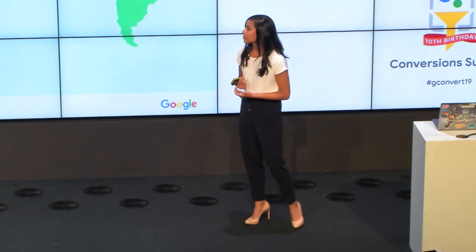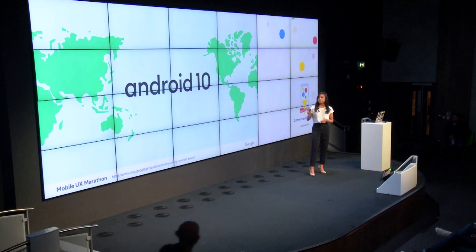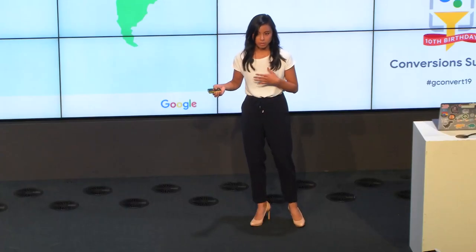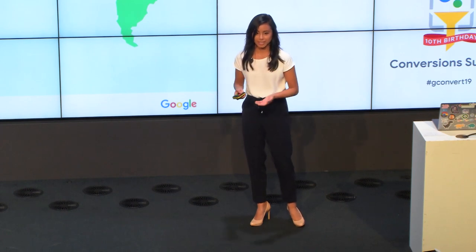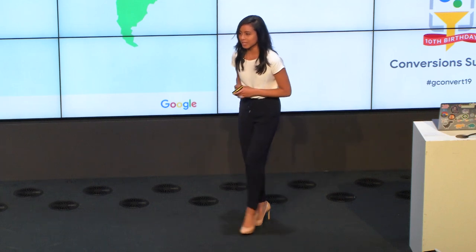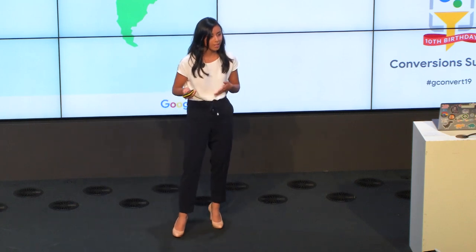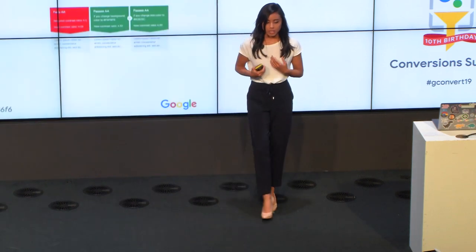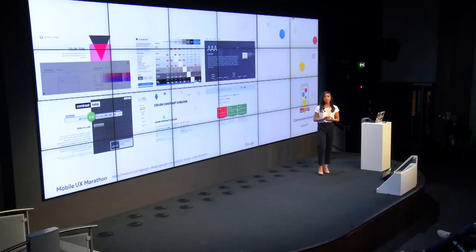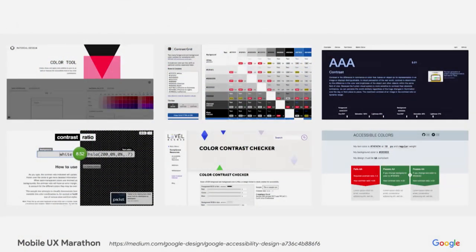A recent example that excites me is the recent Android redesign. Something as simple as turning fonts to black instead of really bright green makes it really easy to read. Changing from letter-based dessert names to numbers — it's no longer Q, it's 10 — also makes it more accessible since dessert names starting with certain letters would be difficult for people in other markets to understand.